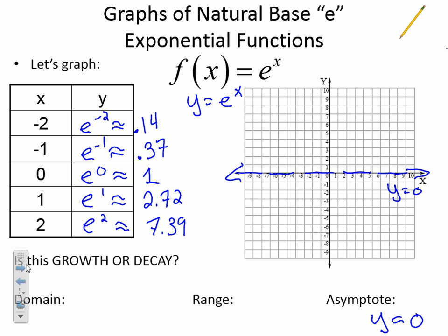So I go negative 2, 0.14, negative 1, 0.37, 0, 1, 1, 2.72, 2, 7.39. So here is my graph.